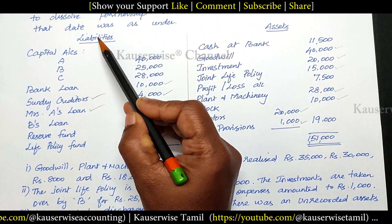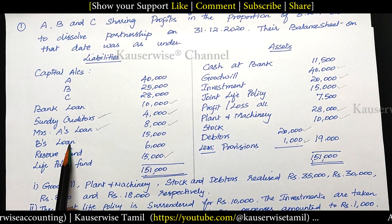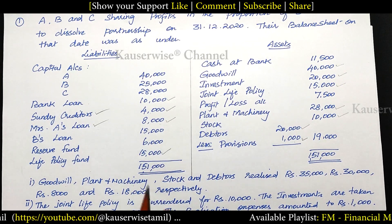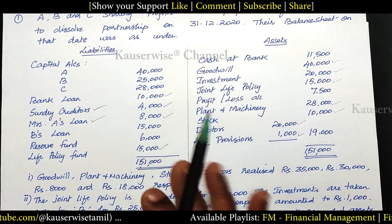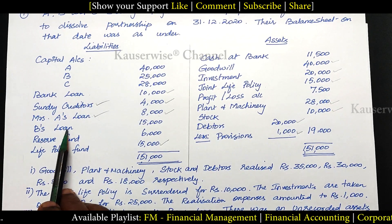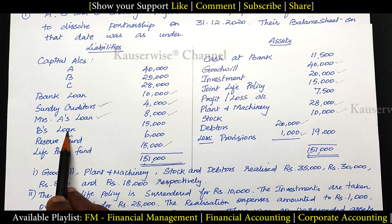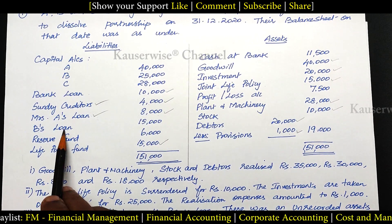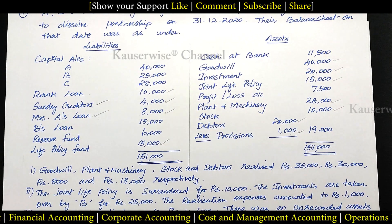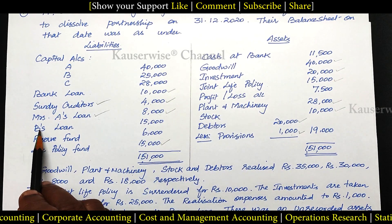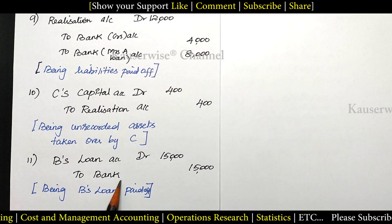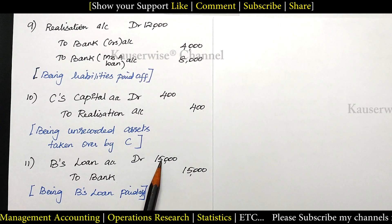Under the liability side, we also have B's loan, which is a partner's loan — an internal liability. We have to repay it after paying all third-party liabilities. You need not record this loan under realization account; you can make payment directly from bank account. Entry: B's Loan Account Dr. to Bank Account — 15,000 — being B's loan paid off.